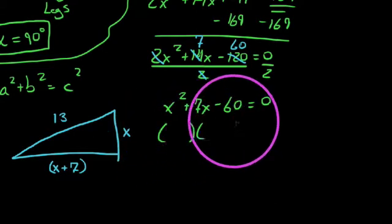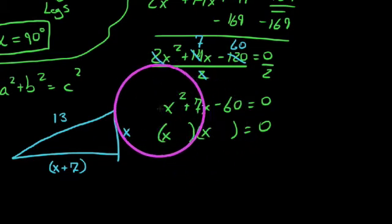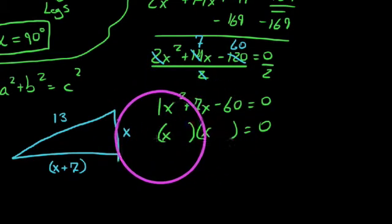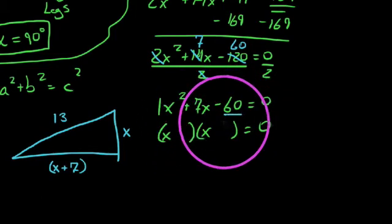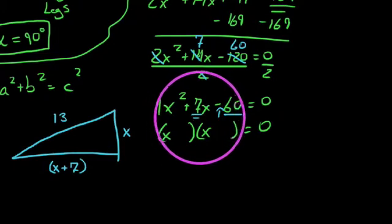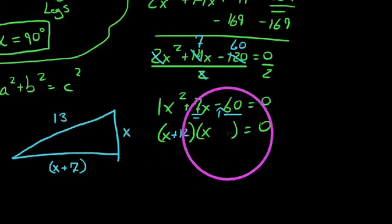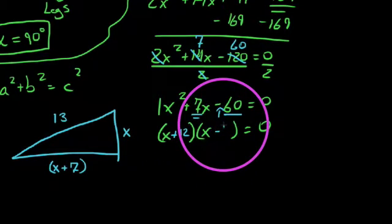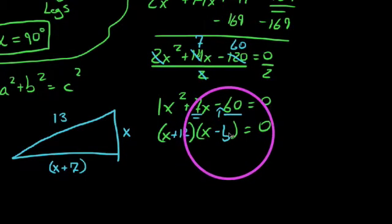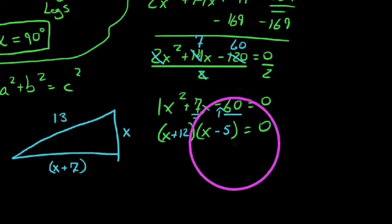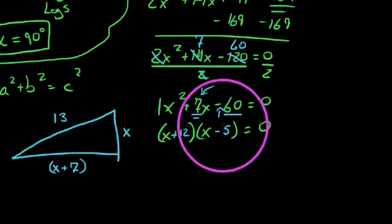So factoring this guy down, we have a quadratic. We'll put our X's in front here since our leading coefficient is 1. We need two integers that multiply out to be negative 60 but sum to be positive 7. And for the sake of time, the first two that pop into my mathematical geeky brain happen to be 12 and 5. So 12 and negative 5 sum to be our positive 7 here, and they multiply out to be our negative 60.